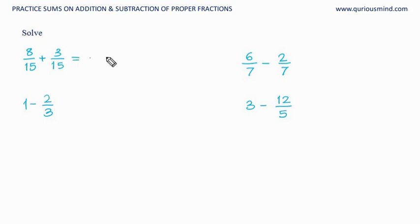We just keep the denominator the same and we will add the numerators. 8 plus 3 equals 11, so 11 upon 15 is the answer here.